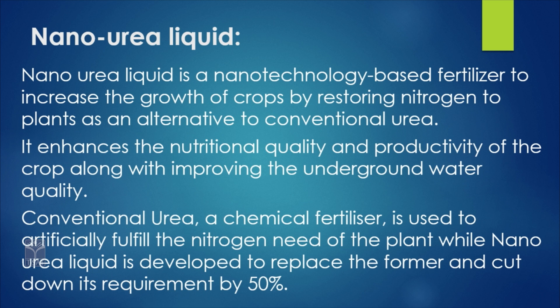We are currently using conventional urea in maximum quantity. Nano urea liquid can be used as an alternative to conventional urea. A very important thing is that the extra urea will be stored in the plant — it will not be wasted, it will be stored. It enhances the nutritional quality and productivity of the crop, along with improving underground water quality.